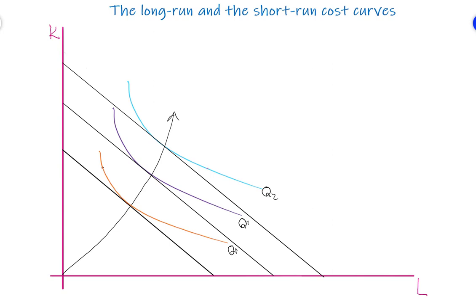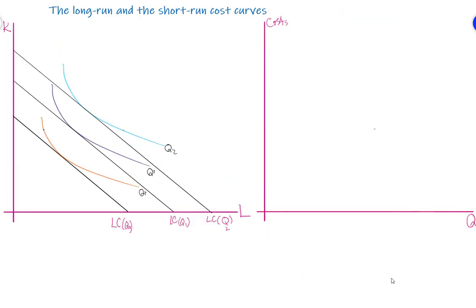If we join the equilibrium points, we get what is called the output expansion path. The output expansion path shows the combination of labor and capital such that cost is minimized given the output the firm wants to produce. Since higher output requires more cost, we can draw the long-run cost curve.